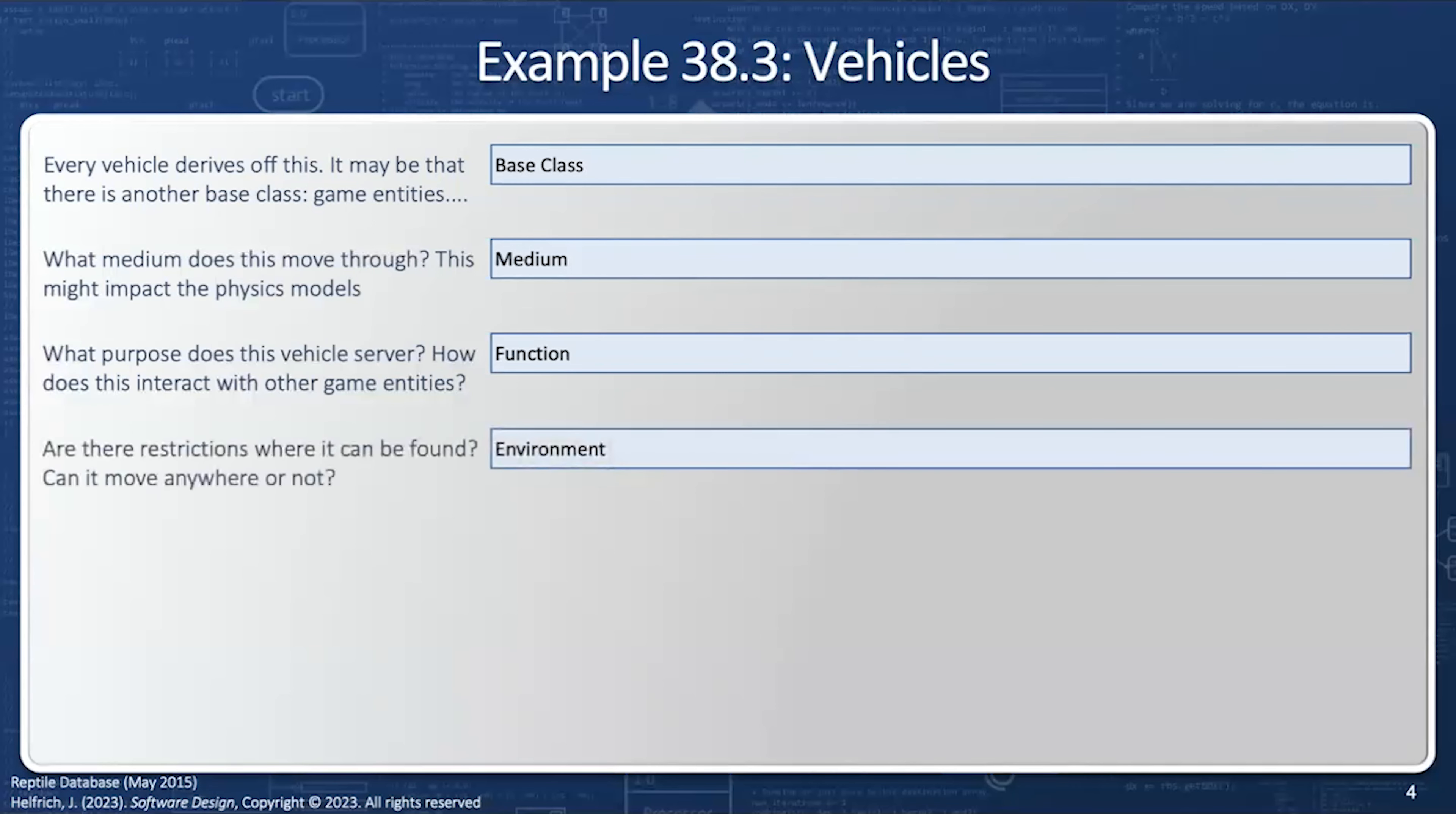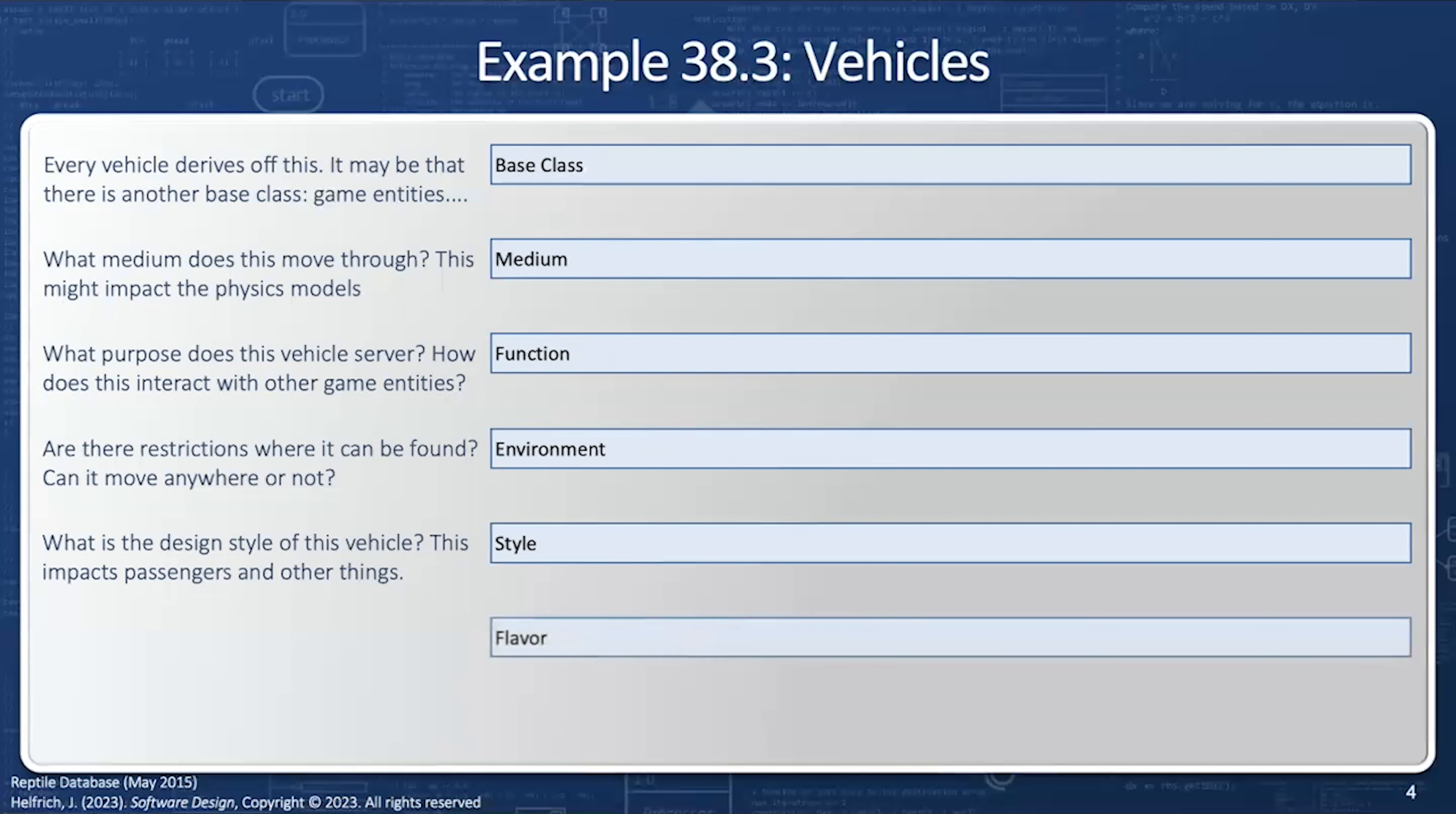Next, we'll have the environment. Are there restrictions where it can be found? Can it move anywhere or not? And then we'll have the style. What is the design style of this vehicle? This impacts how passengers interact with it and other things. And then what flavor? Is there a sub-style? And if so, how does that imply how it interacts with the environment? And then finally, at the very bottom, we have the vehicle, the concrete class.